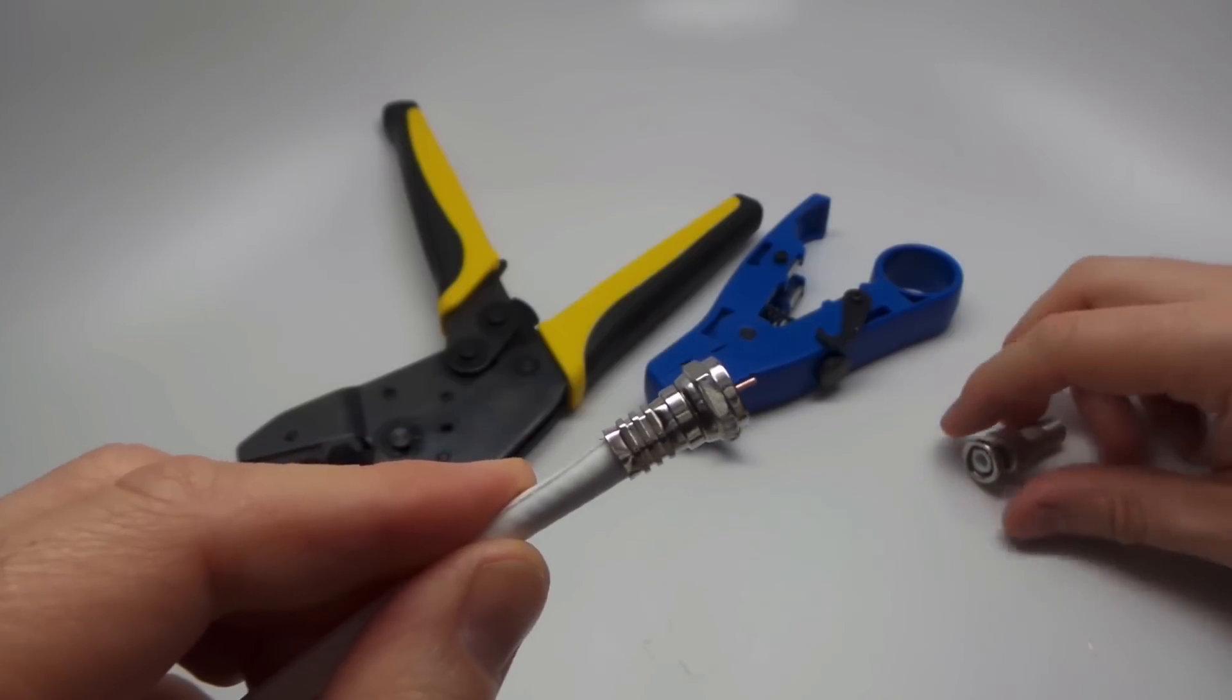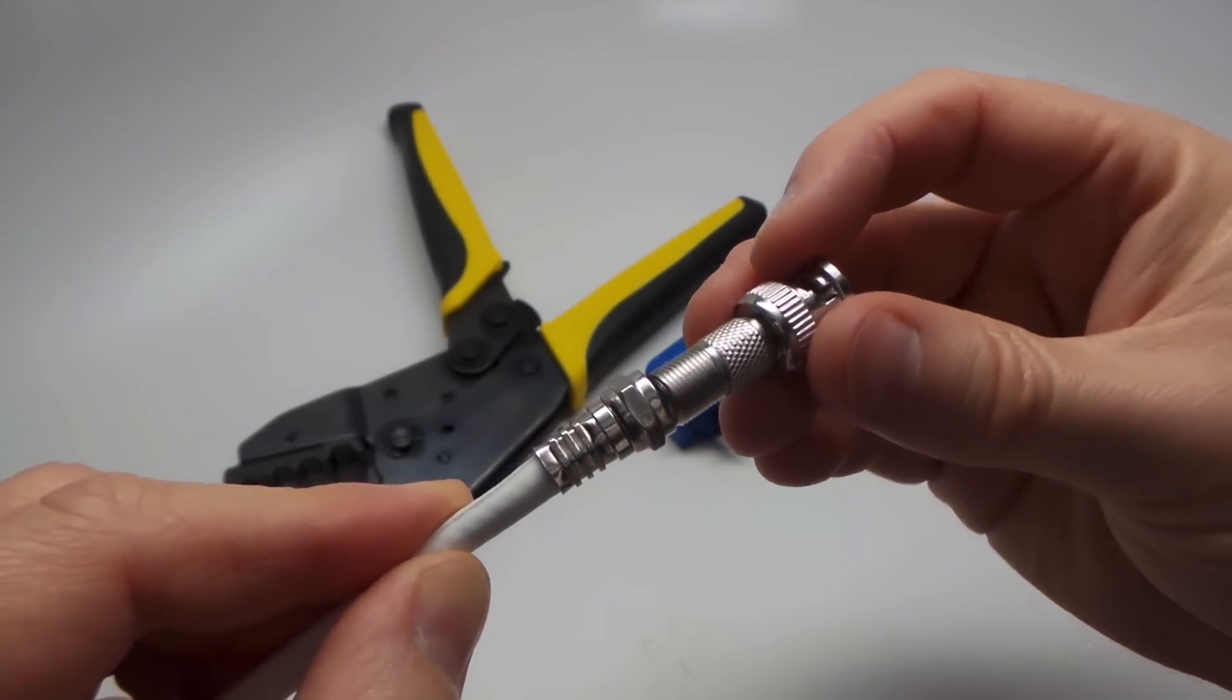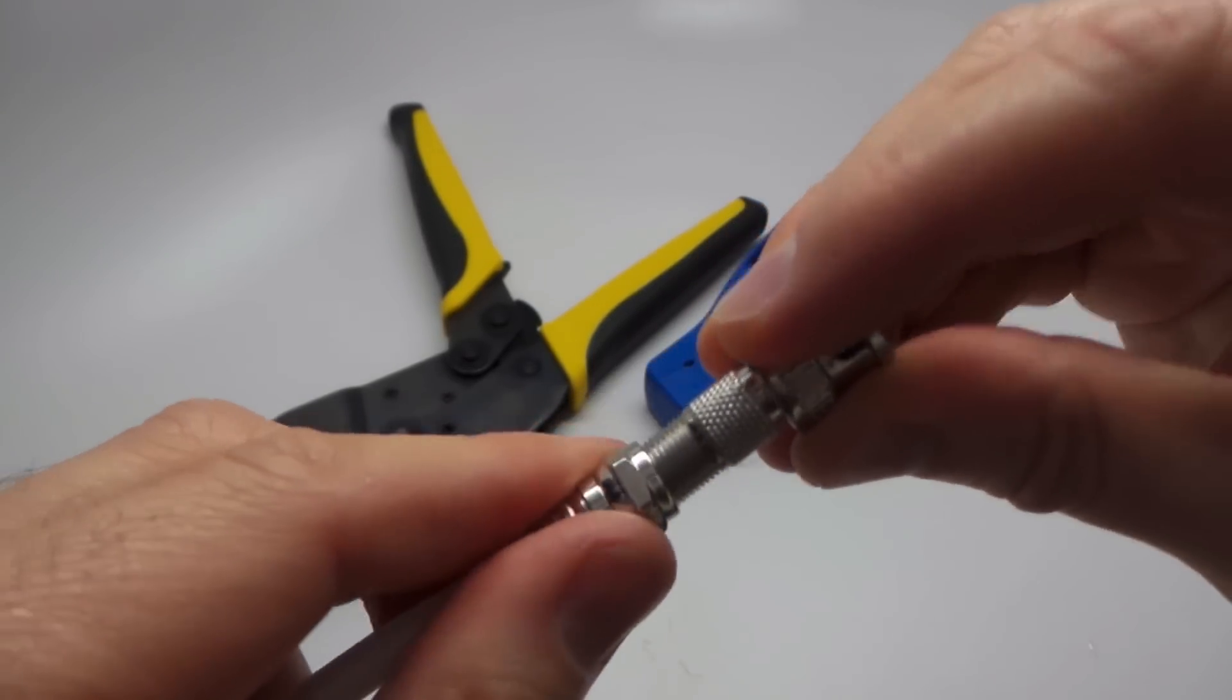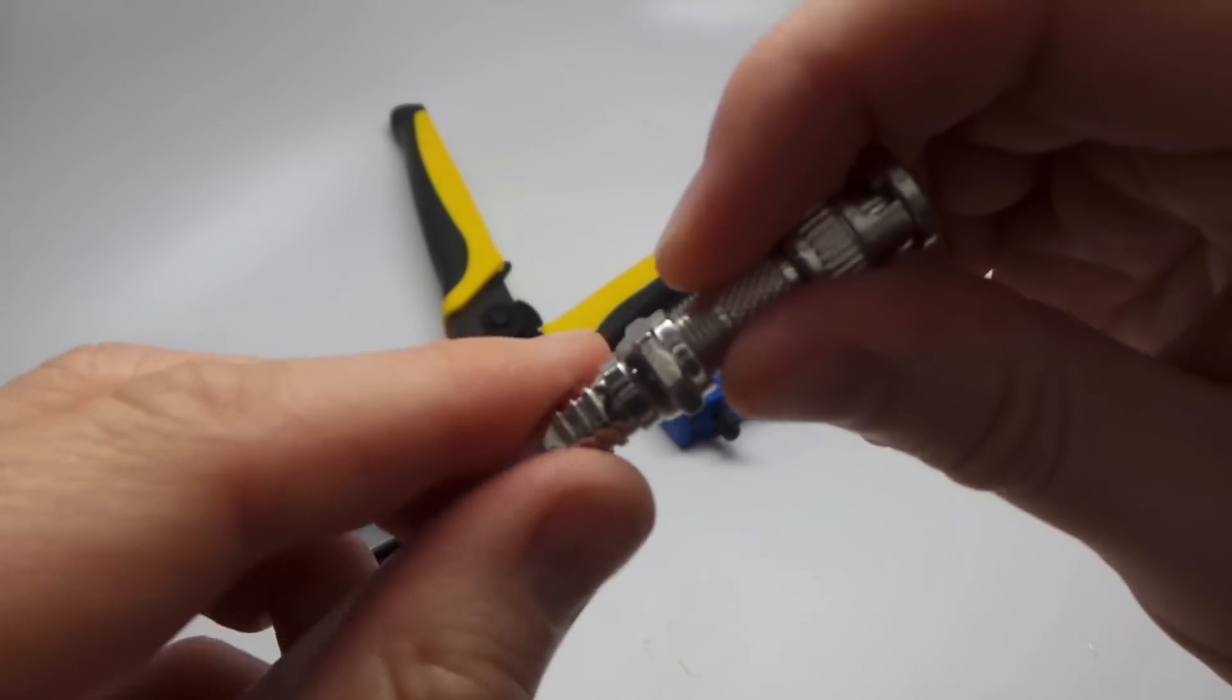And then last, this part's optional. We're going to use this for a CCTV application. So I'm going to add a BNC connector on top of the F connector. I'm using a screw-on BNC connector.